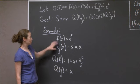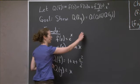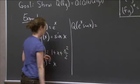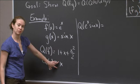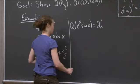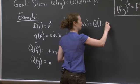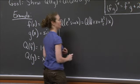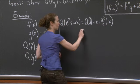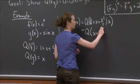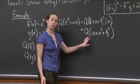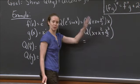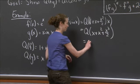So if I wanted to find the quadratic approximation to e to the x times sine x, what this is claiming I can do is instead take the quadratic approximation of Q(f) times Q(g). That's the quadratic approximation of (1 plus x plus x squared over 2) times x. The quadratic approximation of that is the quadratic approximation of x plus x squared plus x cubed over 2. Since this is a polynomial, the quadratic approximation at x equals 0 is just all the terms up to the quadratic term — so I drop higher order terms and just get x plus x squared.